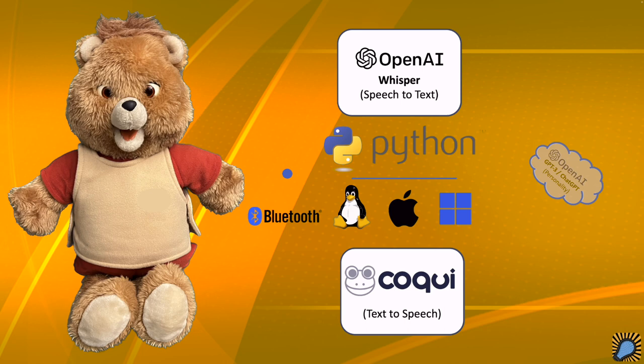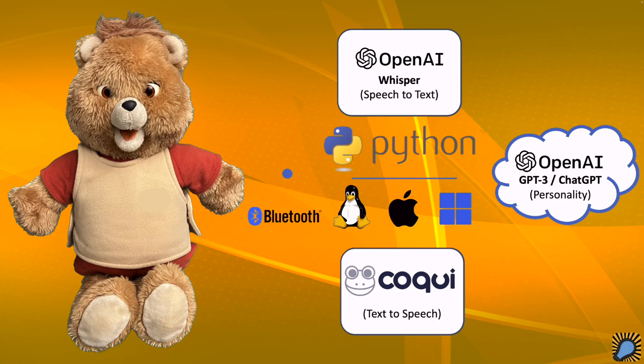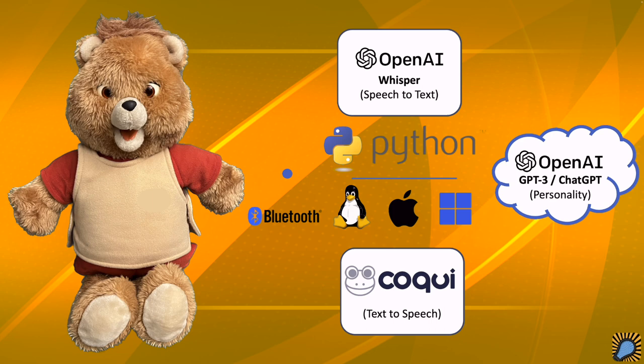The third key component is OpenAI's GPT-3, which resides in the cloud. This AI model grants Teddy its personality and authors the dialogue that Teddy says in response to requests. Now that I've covered all of the major components, let's walk through how they interoperate together, step by step.